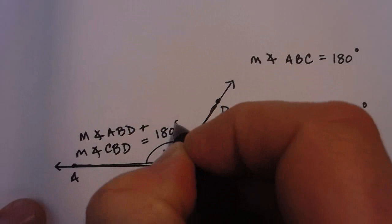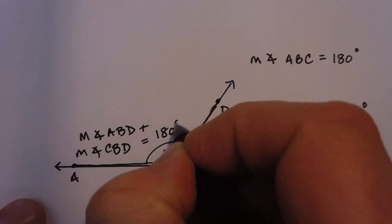So you have two different types of angles that we're talking about. Angles that add up to a 90 degree angle, those are called complementary. And then angles that add up to a 180 degree angle, those are called supplementary.